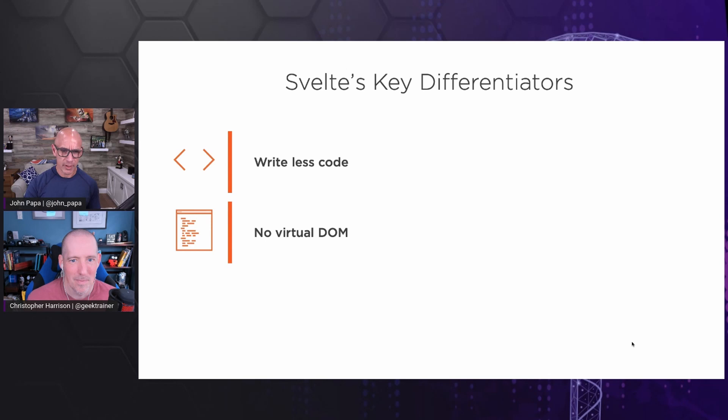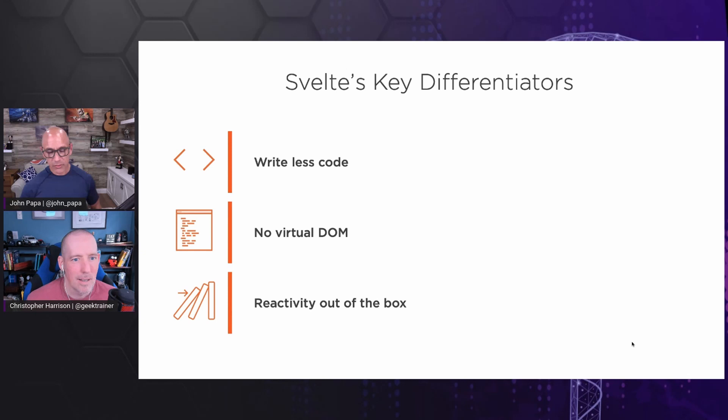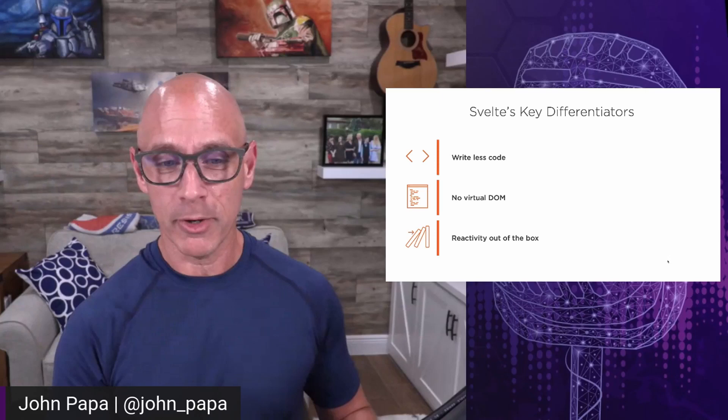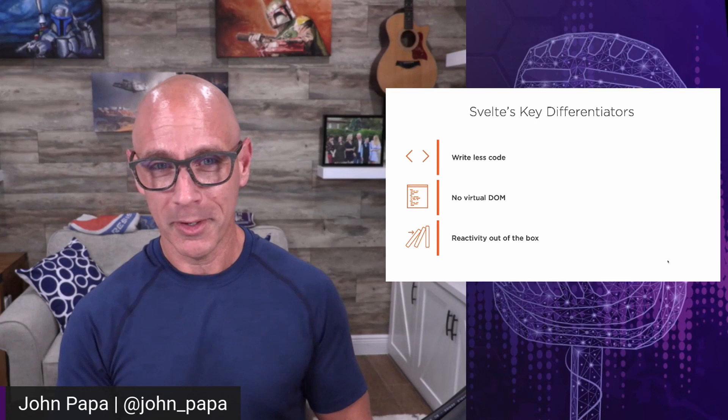We hear about the virtual DOM all the time with things like React, but Svelte doesn't deal with the virtual DOM. What is a virtual DOM? The DOM itself is the document object model — every browser has a DOM. Years ago the DOMs in browsers were different in each version of each browser, which meant as a web programmer I was coding with if-then statements in JavaScript for every version of every browser. The virtual DOM effectively sits side-by-side with the DOM, you manipulate it and then insert it into the DOM itself. It's a way to make updates, get rid of flicker, and make the browser go faster.